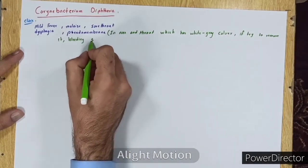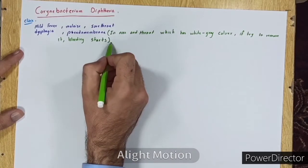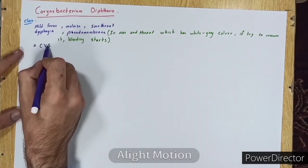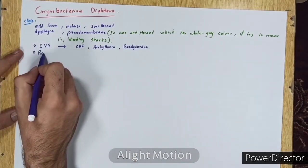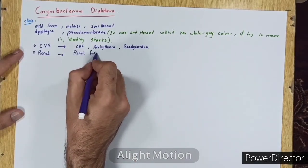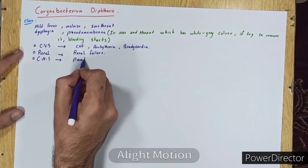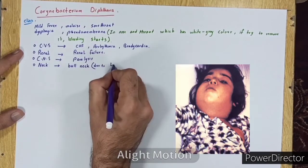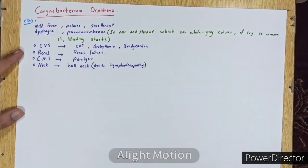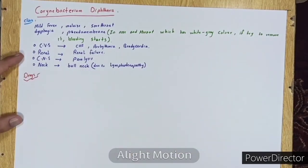This is a very important clinical point. In cardiovascular system, congestive heart failure, arrhythmia, and bradycardia occur. In renal system, renal failure. In CNS, paralysis, and bull neck due to lymphadenopathy. Now, drugs which are used in this case.